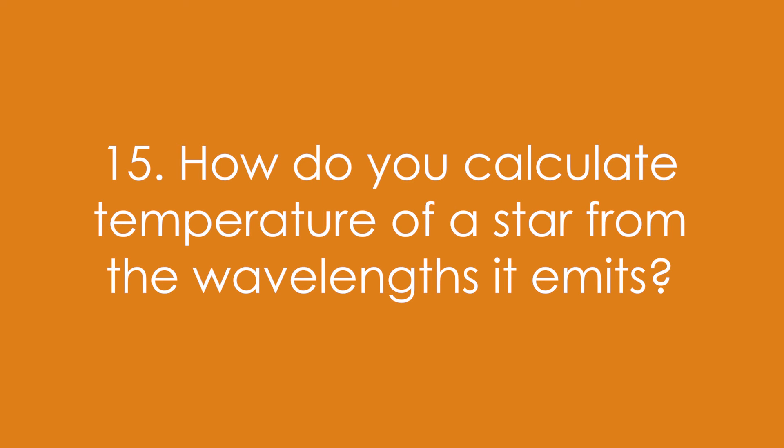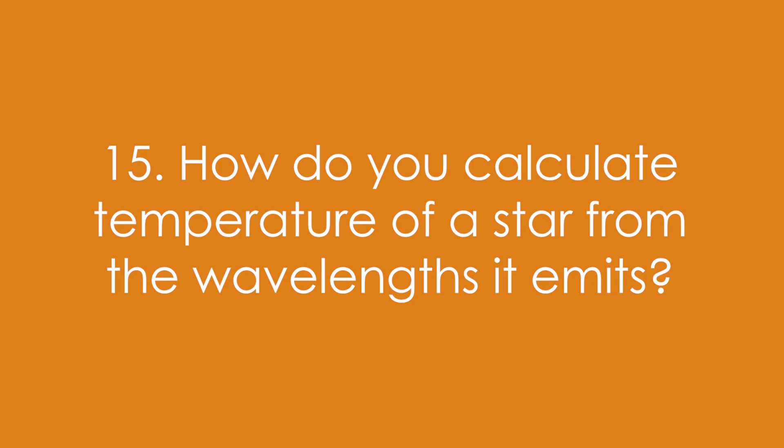Question 15: How do you calculate temperature of a star from the wavelengths it emits? We use Wien's law. That is peak wavelength times the temperature in Kelvin is equal to 0.0029. We can get the peak wavelength from the graph that we just saw.